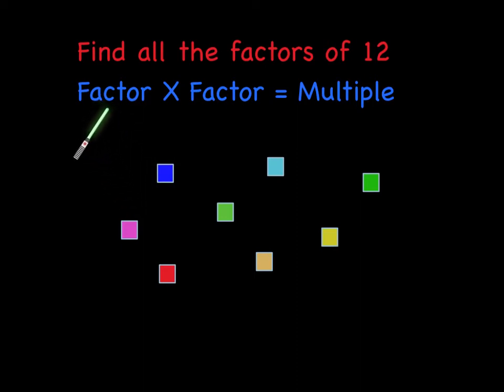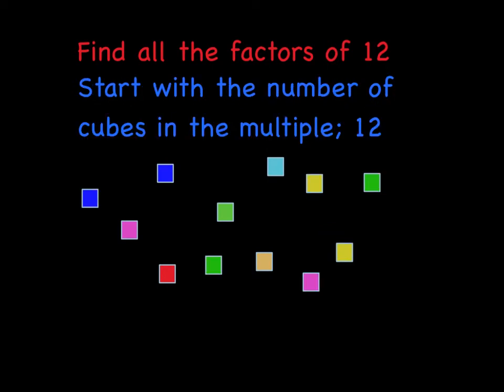First of all, a factor is a number that's multiplied by another factor to get a multiple. So in this example, 12 is going to be our multiple, and we're going to try to find all the different factors that we can for the number 12. And so before we can begin, we need to make sure we have 12 cubes out there. So get 12 cubes.